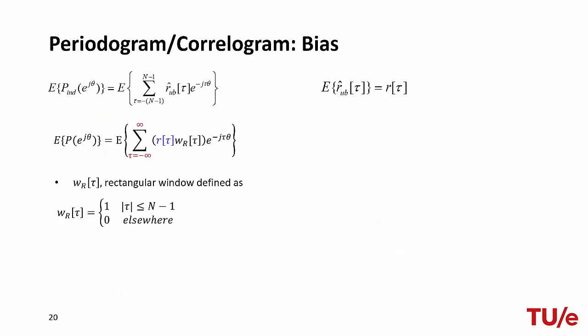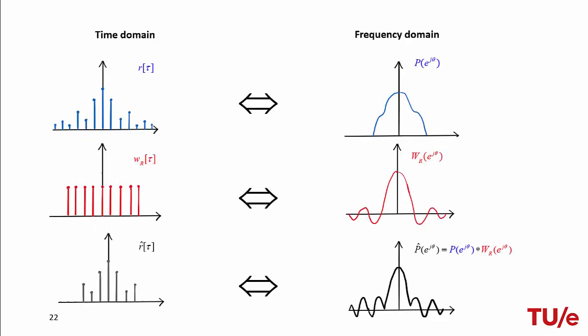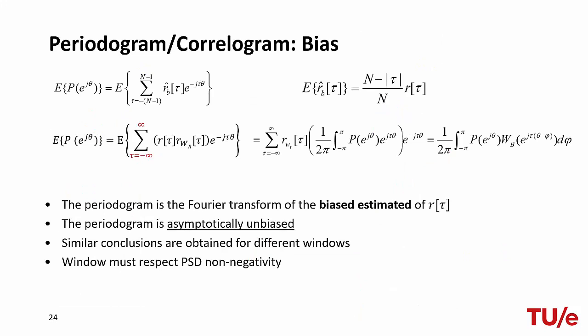If we were to use the unbiased estimator of the autocorrelation, it would be equivalent to multiplying the true autocorrelation by 1, so when we extend the summation to infinite lags, we need to multiply the true autocorrelation by a rectangular window of length equal to the number of lags. The transform of this window is a periodic sinc function, so we need to convolve the true spectrum by a sinc function, which can have negative values — and as a result, our estimate of the power spectral density can become negative. Therefore, when calculating the correlogram, we use the biased estimate of the autocorrelation function, which is asymptotically unbiased, equivalent to using a triangular window. The chosen window must respect the non-negativity property of the power spectral density.